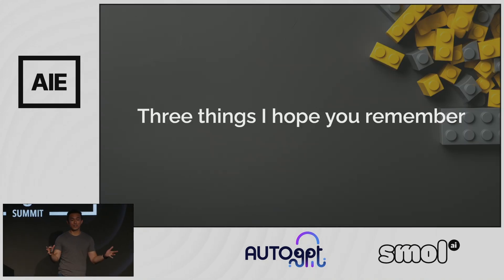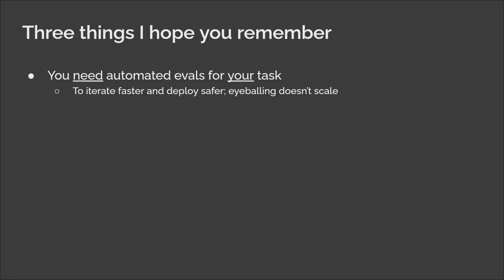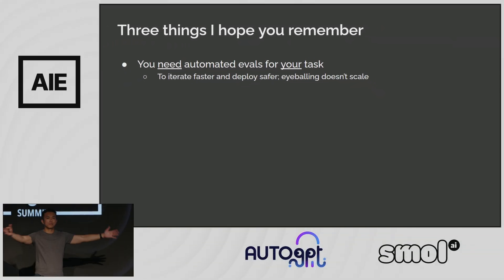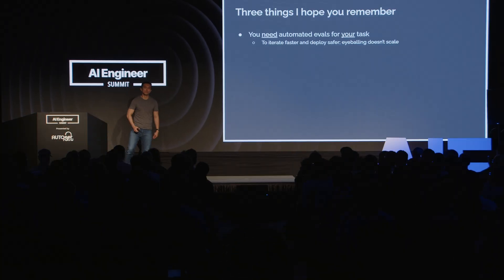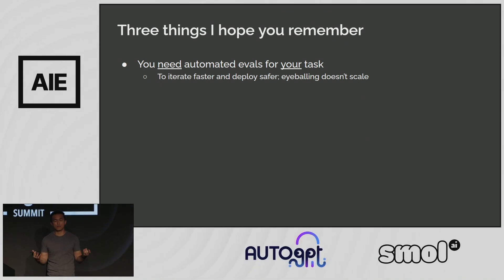If you remember anything from this talk, I hope it's these three things. First: you need automated evals. Just annotate 30 or 100 examples and start from there, then figure out how to automate it. It will help you iterate faster on your prompt engineering, retrieval augmentation, and fine-tuning, and help you deploy safer. Eyeballing doesn't scale — it's good as a final vibe check, but it just doesn't scale. Every time you update the prompt, you want to run your evals immediately. I run tens of experiments every day, and the only way I can do this is with automated evals.